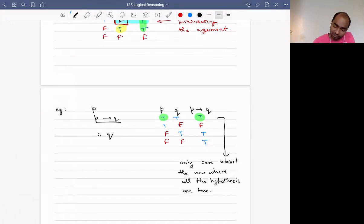And in this row, then I look for the conclusion. The conclusion here is Q. And if I look at Q, Q is true.